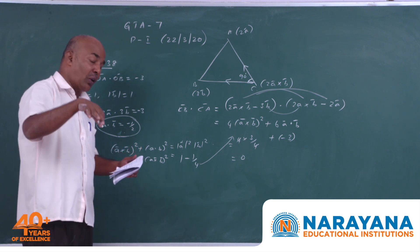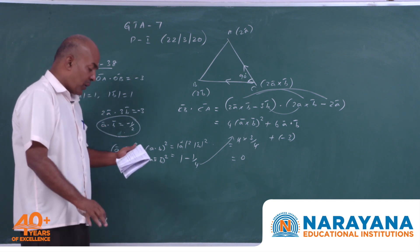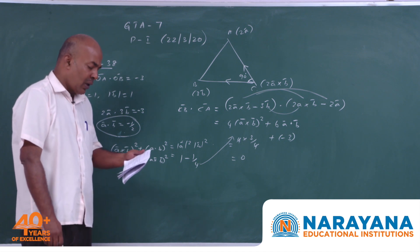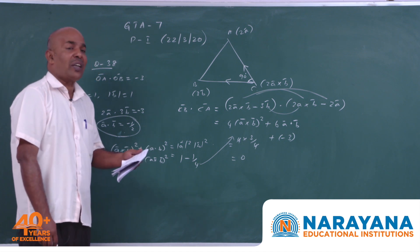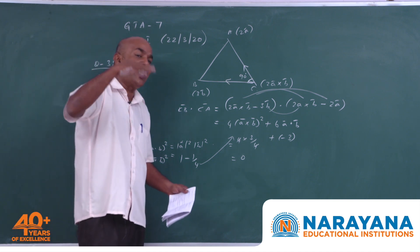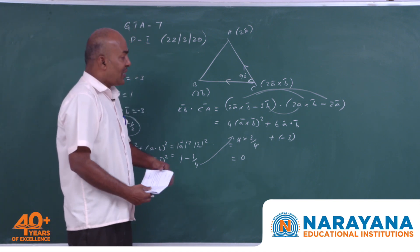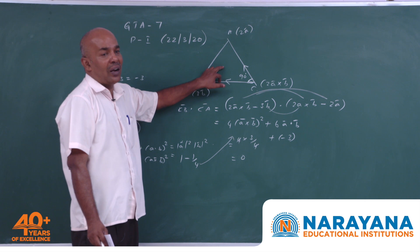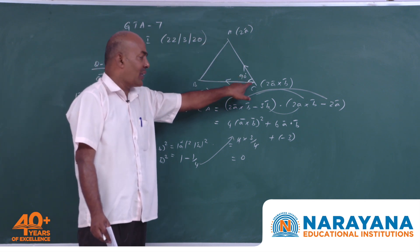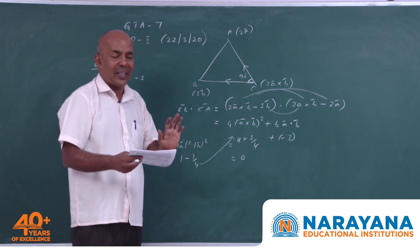Since the triangle is right-angled at C, the orthocentre lies at vertex C, which is inside the triangle — not outside. So option B, which says the orthocentre lies outside the triangle, is incorrect.